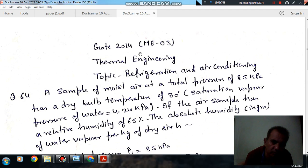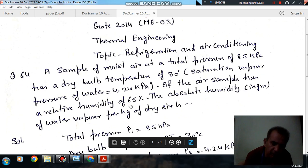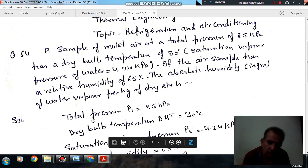Question number 54 from gate 2014, MH03. A sample of moist air at a total pressure of 85 kPa has a dry bulb temperature of 30 degrees. Saturation vapor pressure of water is equal to 4.24 kPa. If the air sample has a relative humidity of 65%, the absolute humidity in gram of water vapor per kg of dry air is dash.